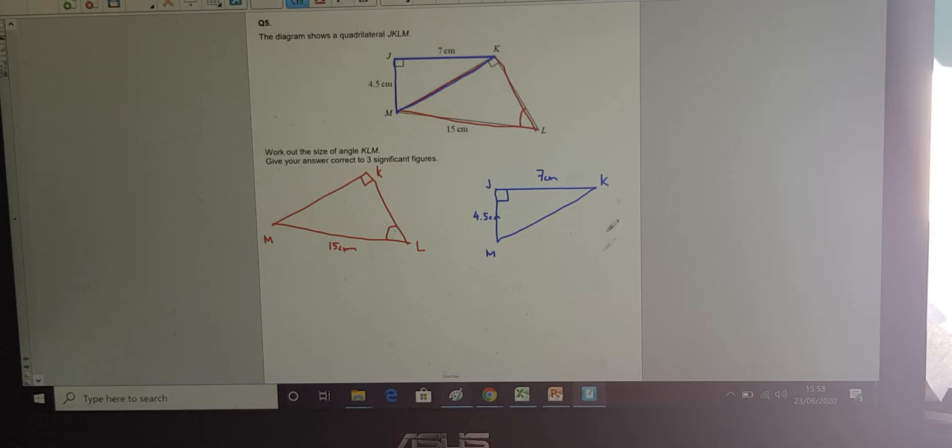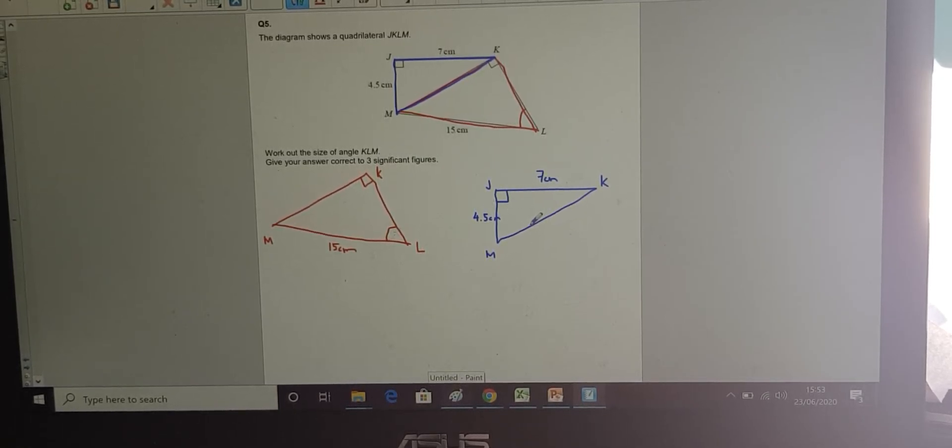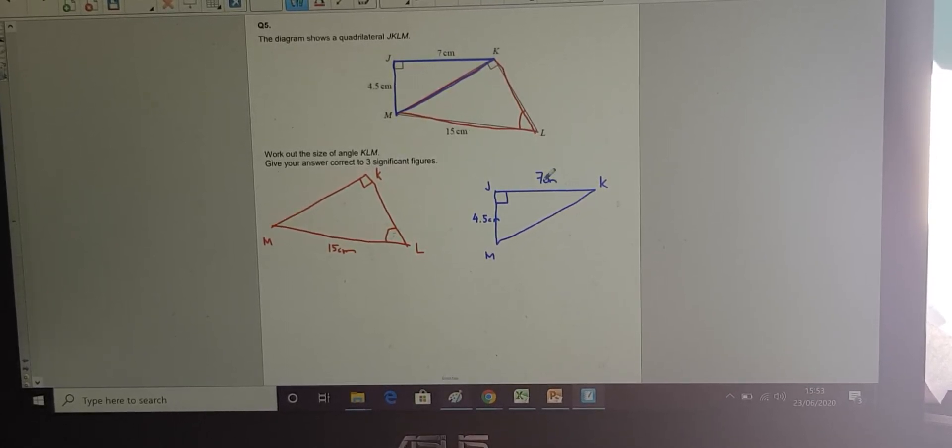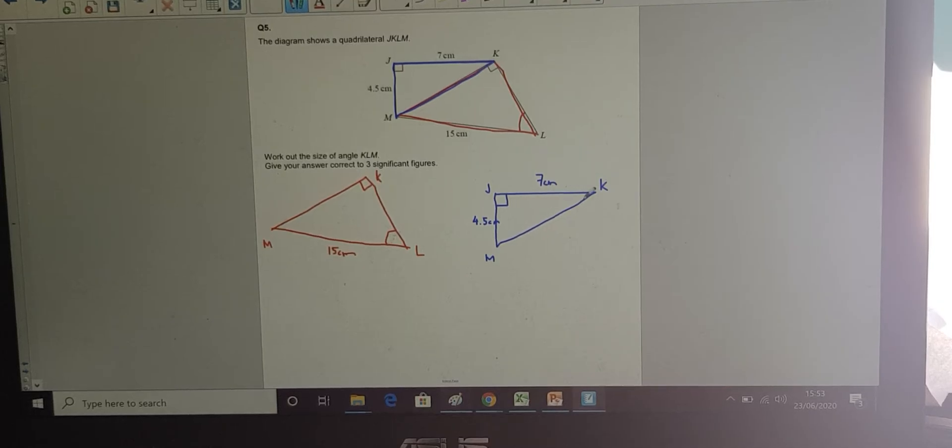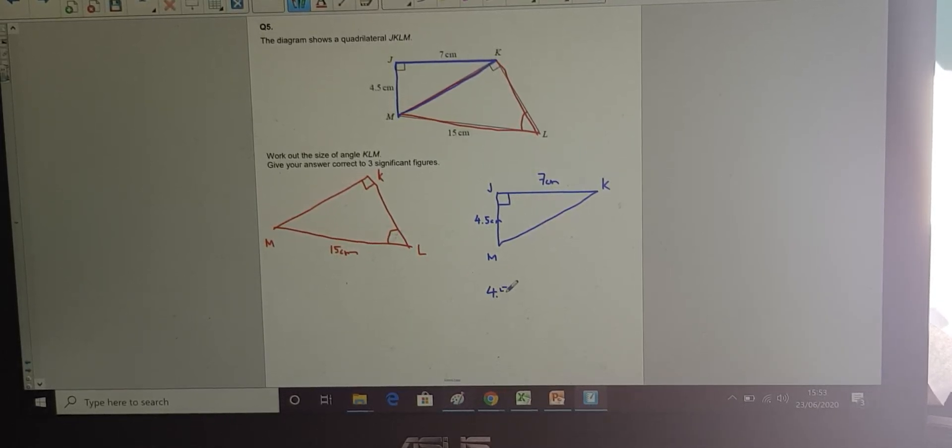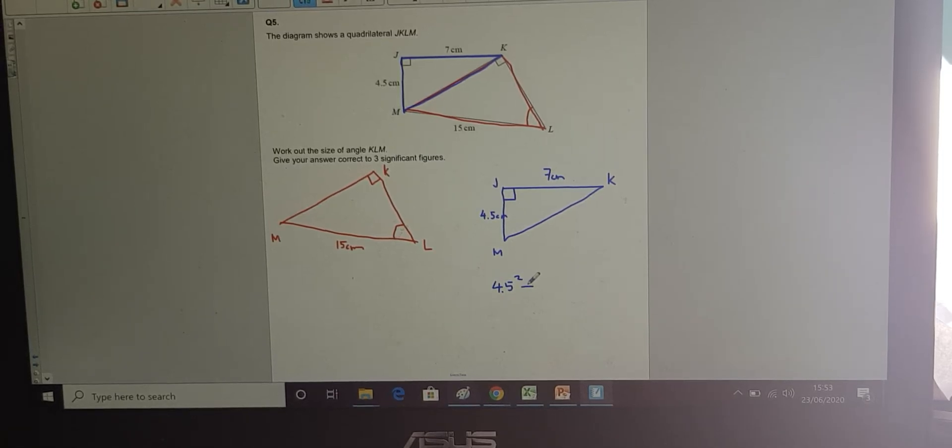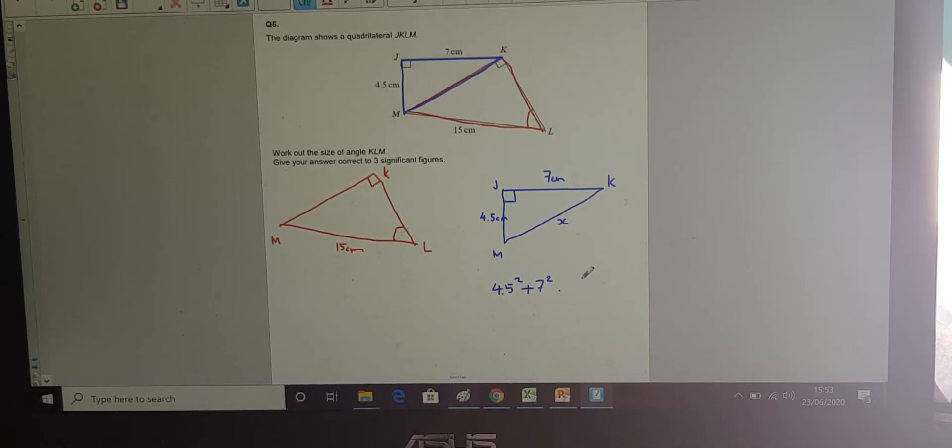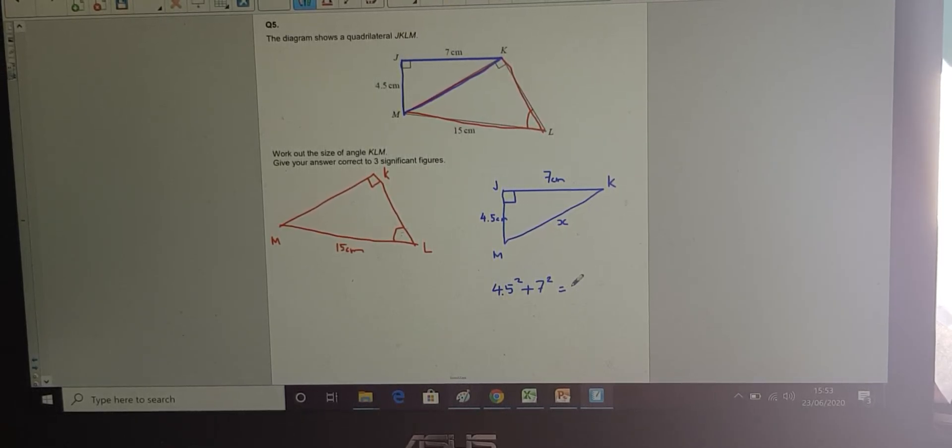It's a right-angled triangle, I have two sides, and I want the hypotenuse. I'm therefore going to use Pythagoras, that tells us that A squared, plus B squared, equals C squared, which will be my hypotenuse. So, 4.5 squared, plus 7 squared, will give me this length here. Let me just label that so it's nice and clear, actually. Let me call it X, equals X squared.